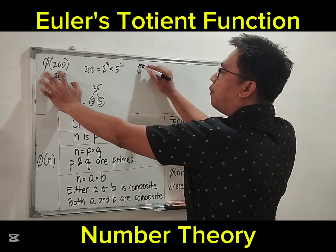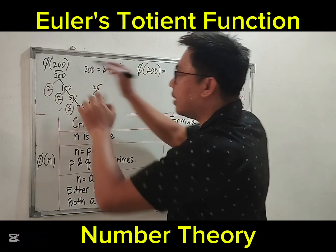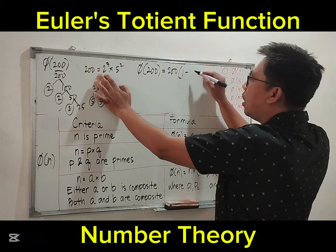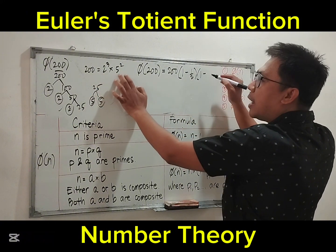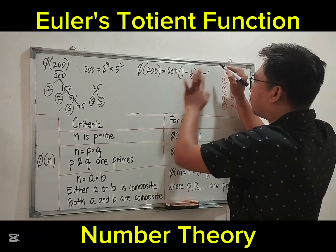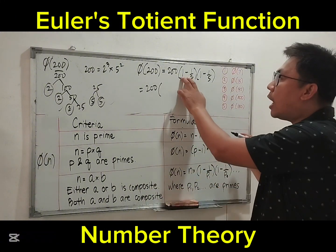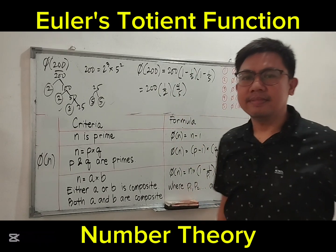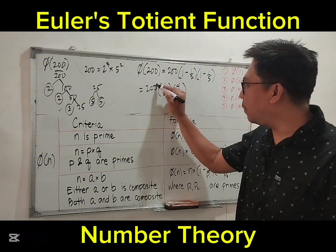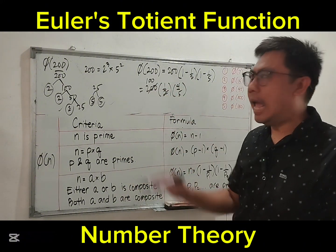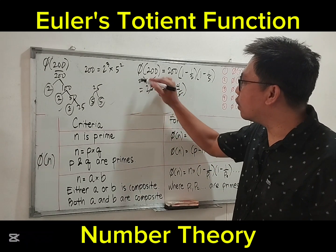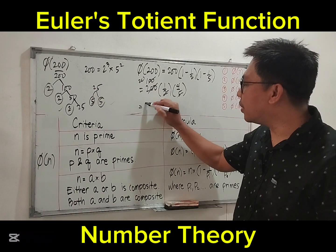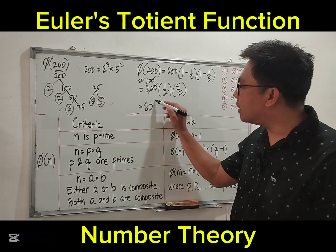Applying the formula: phi of 200 equals 200 times (1 minus 1/2) times (1 minus 1/5). Simplifying: 1 minus 1/2 equals 1/2, and 1 minus 1/5 equals 4/5. Then 200 divided by 2 equals 100, and 100 divided by 5 equals 20. Multiply: 20 times 4 equals 80. Therefore phi of 200 equals 80.